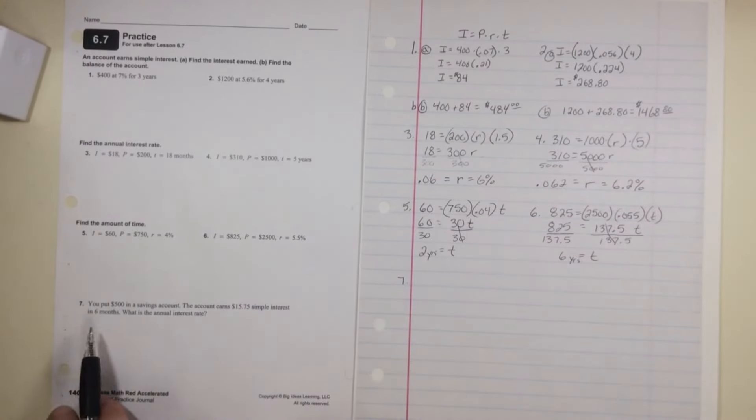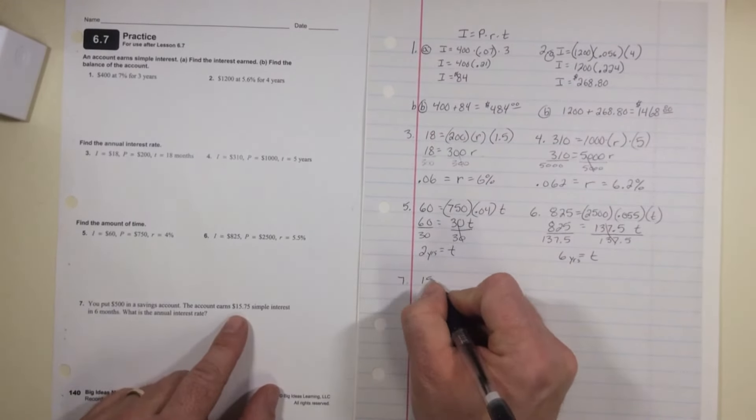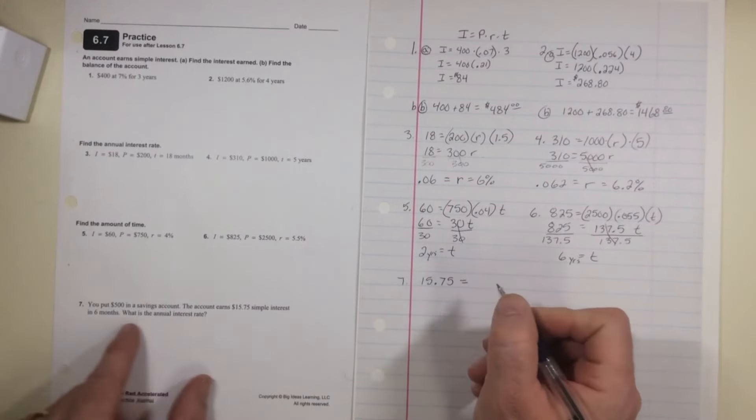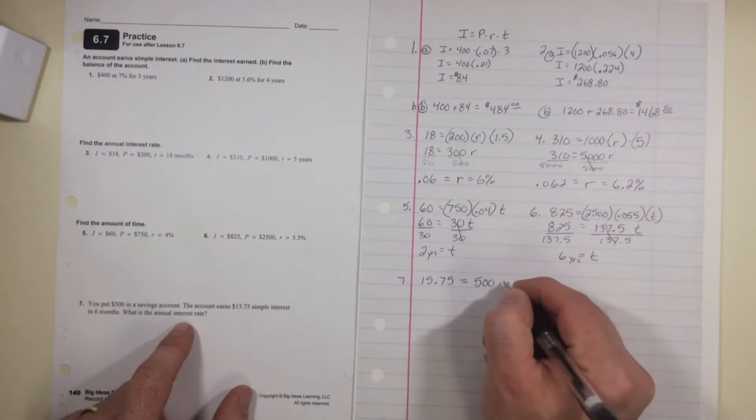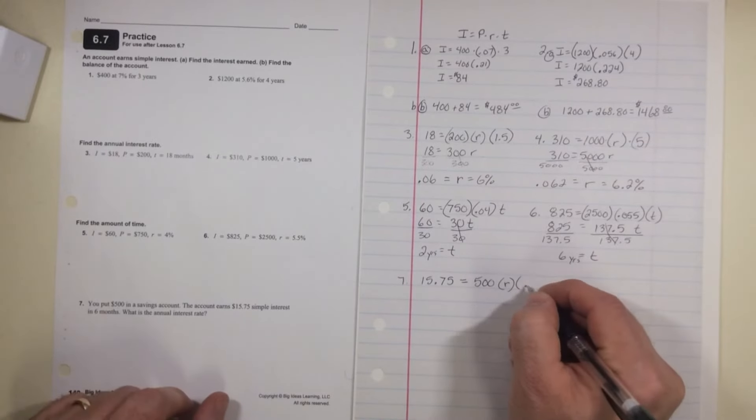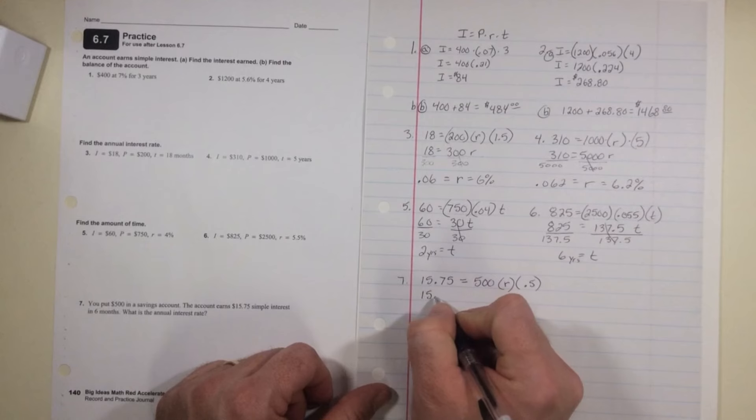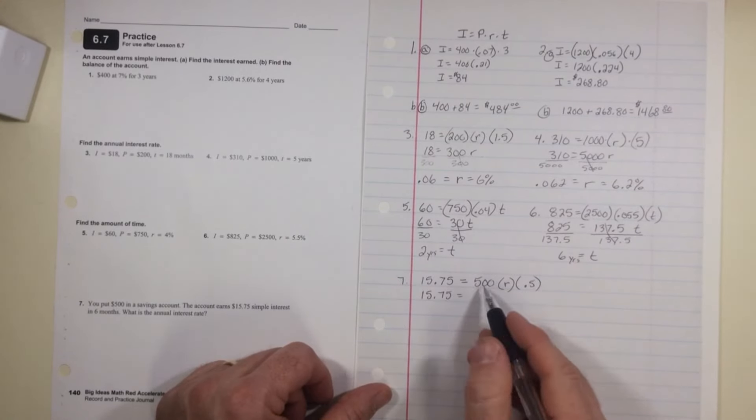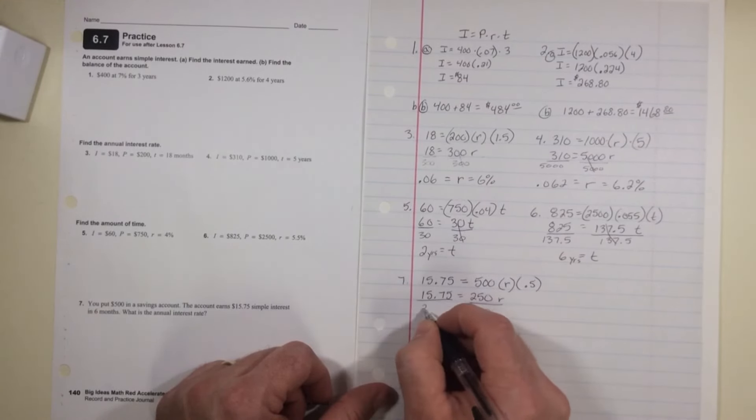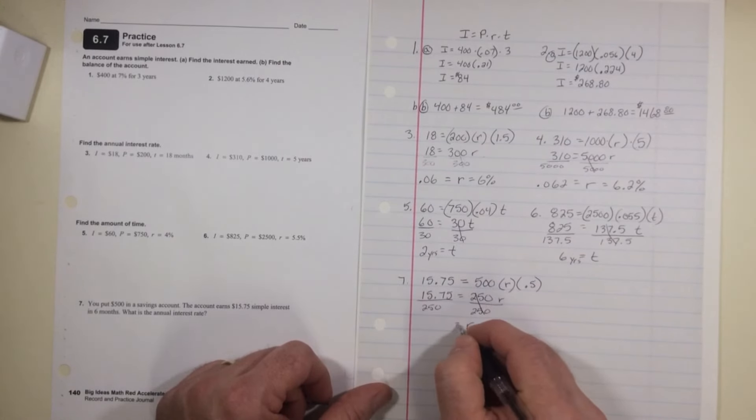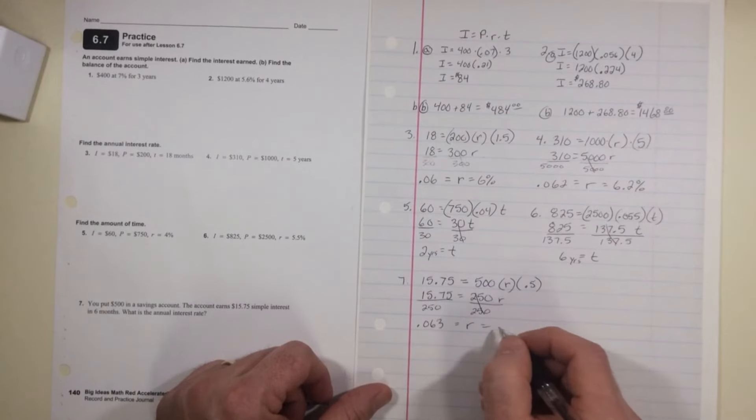Finally, number 7. You put $500 into a savings account. The account earns $15.75 simple interest in 6 months. What's the annual interest rate? So here's the interest, $15.75. The principal, $500. We don't know the rate, so that's what we're looking for. And the time, 6 months, would be 0.5 for years. Well, $15.75 equals 0.5 times $500, that's 250R. Divide both sides by 250, and R equals 0.063, which equals, looking at the decimal two places, 6.3%.